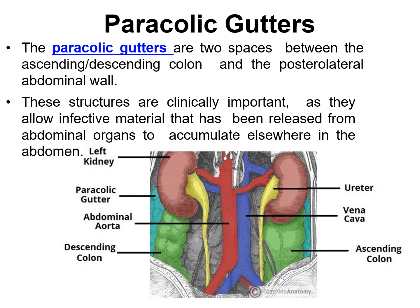Now we will see what the paracolic gutters are. Paracolic gutters are spaces between the ascending or descending colon and the posterolateral abdominal wall — the right paracolic gutter between the ascending colon and the lateral wall, and the left paracolic gutter between the descending colon and the lateral wall. These spaces are clinically important as infective material can accumulate there in cases of abdominal infection.